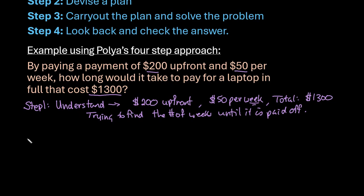So step two is to come up with a plan. So we're going to devise a plan, we're not going to solve, we're just going to look at what we need to do. So what we need to do is we need to figure out how much is left to pay off. So that's the first thing that we need to do.